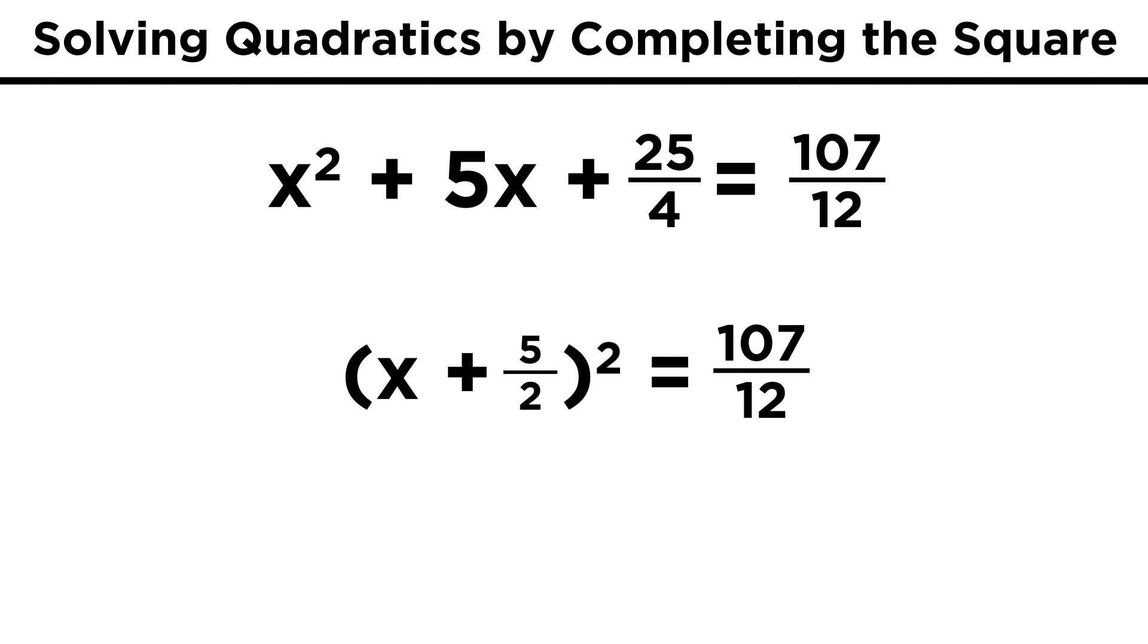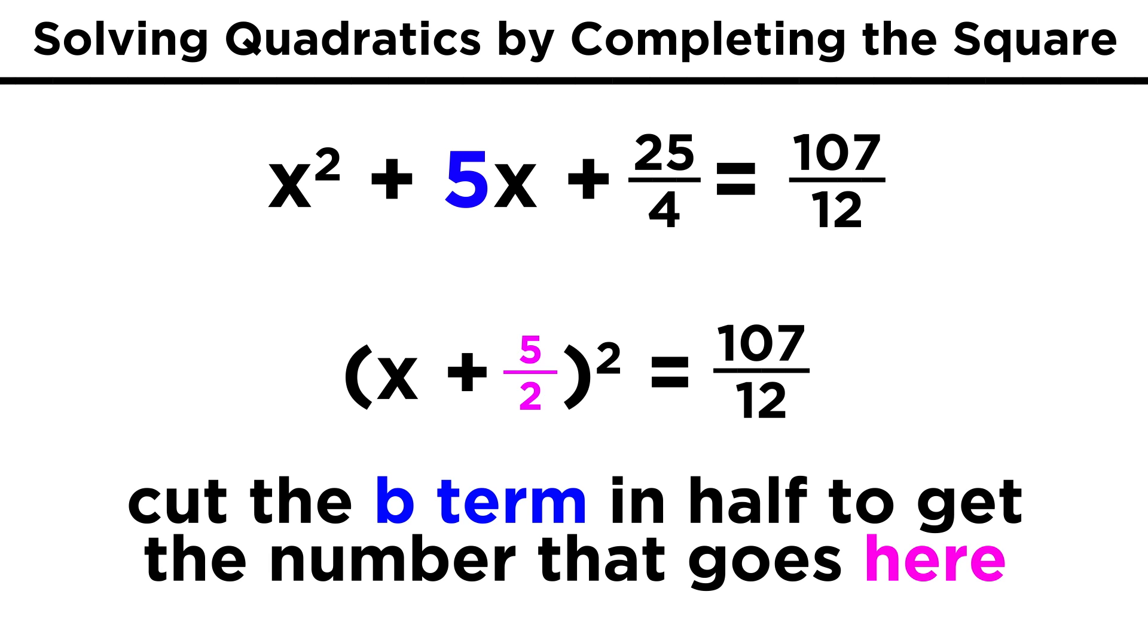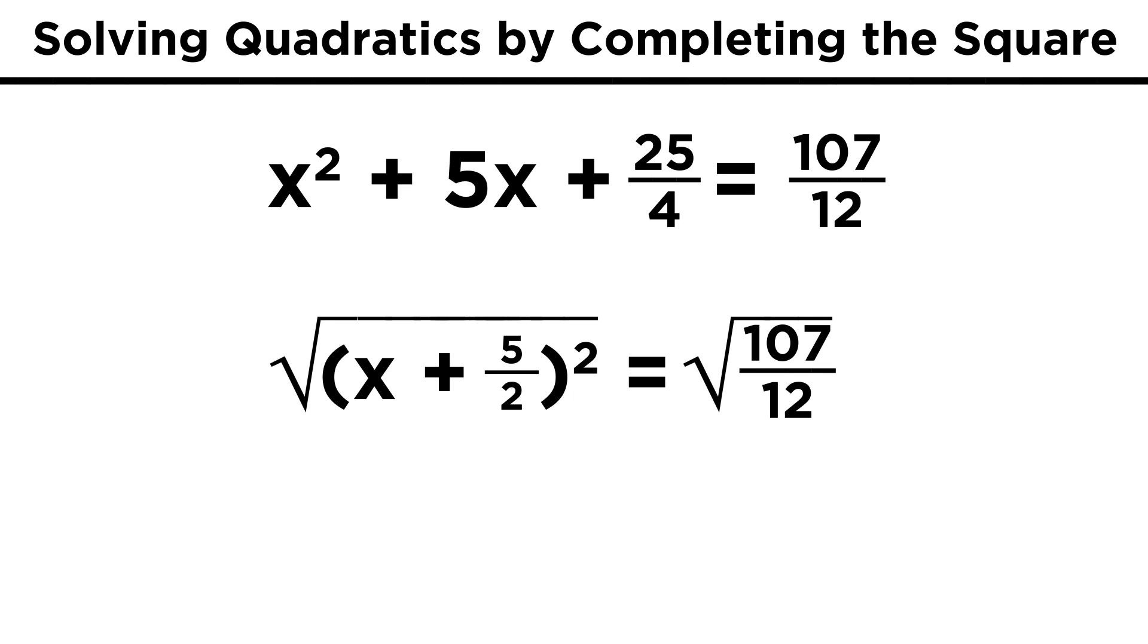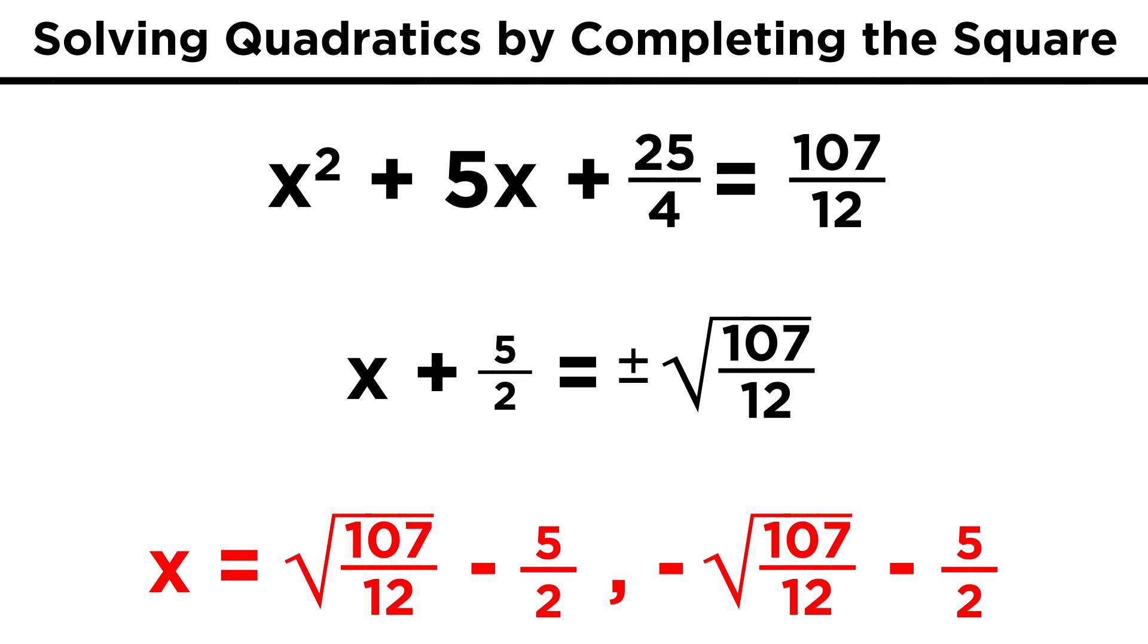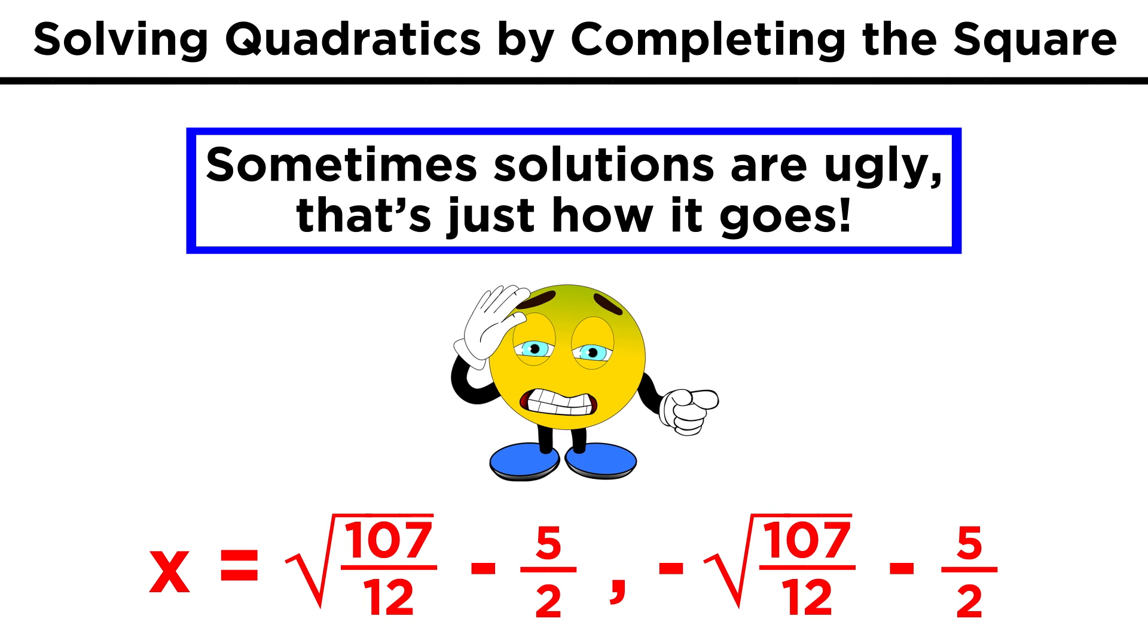Now we factor the left side to get x plus 5 halves quantity squared. Remember, when we cut that initial b term in half before we square it, that's the number that will end up in the resulting binomial. Then just like the other examples, we take the square root of both sides and subtract 5 halves, which will allow us to express the two solutions for x, being sure to simplify radical expressions if applicable. Don't worry if the answers look unappealing. If that's what we get, then that's what it is. And solutions won't always be neat and tidy. With this new technique under our belts, let's check comprehension.